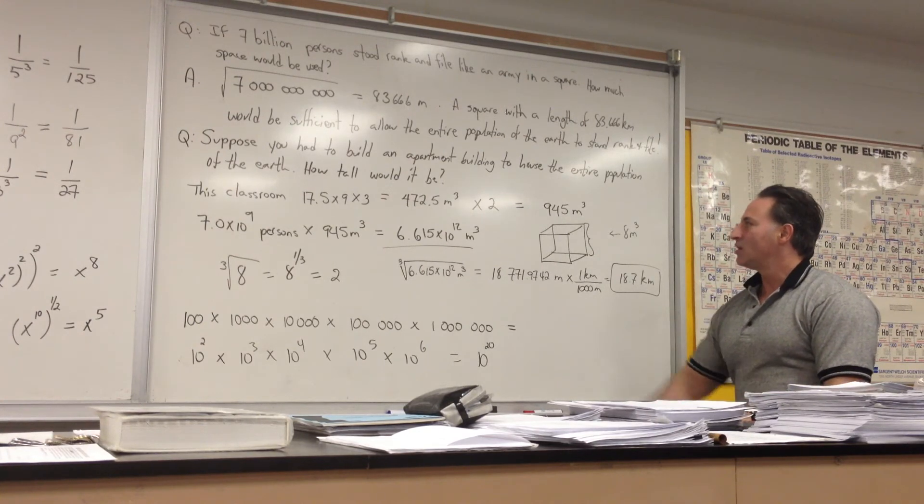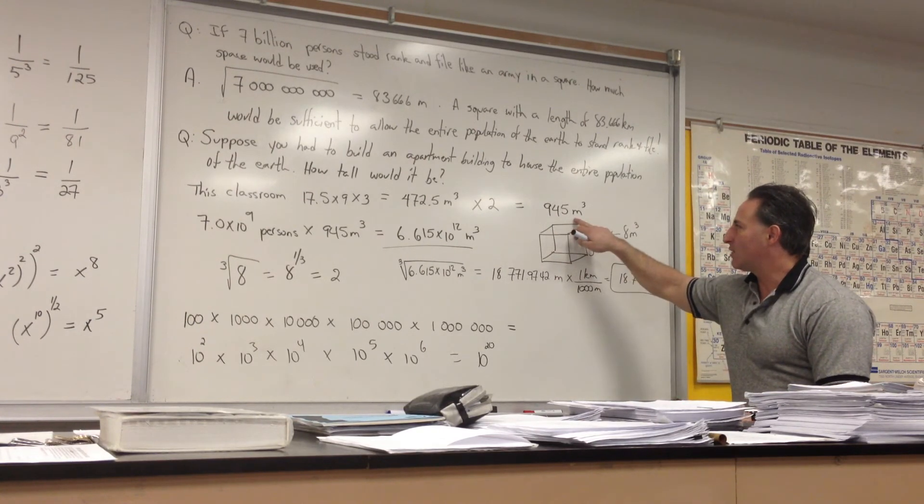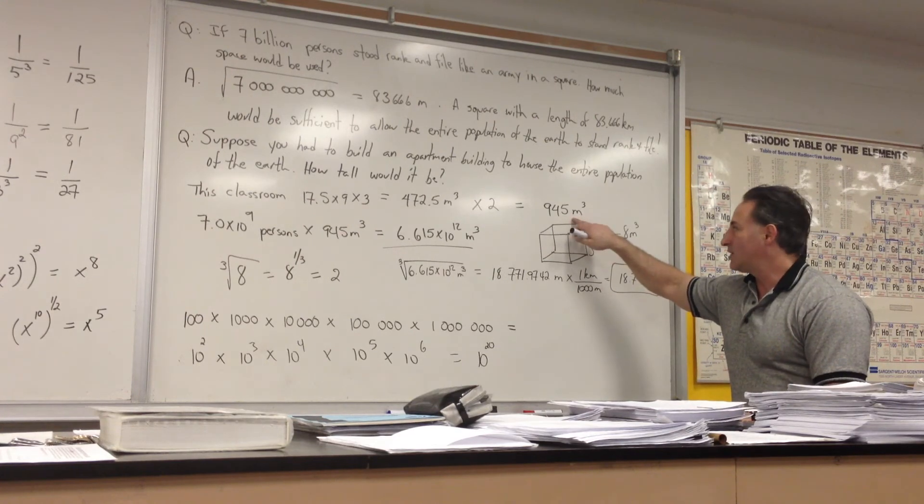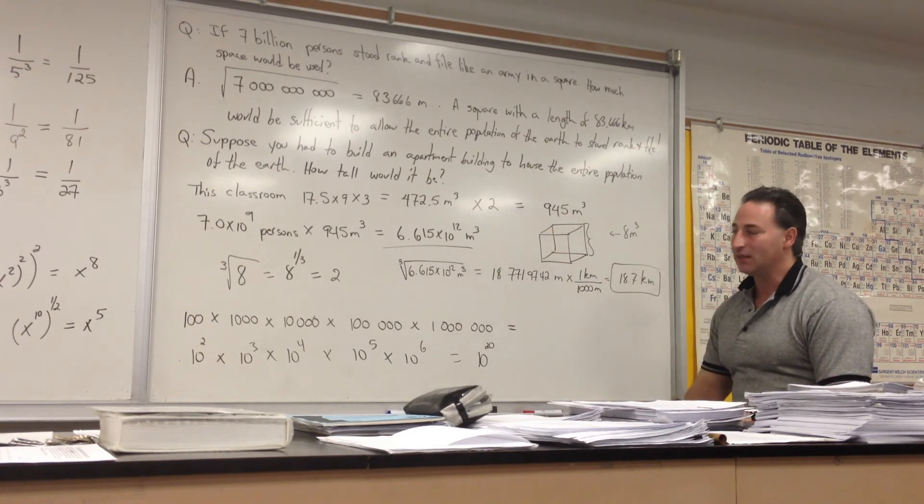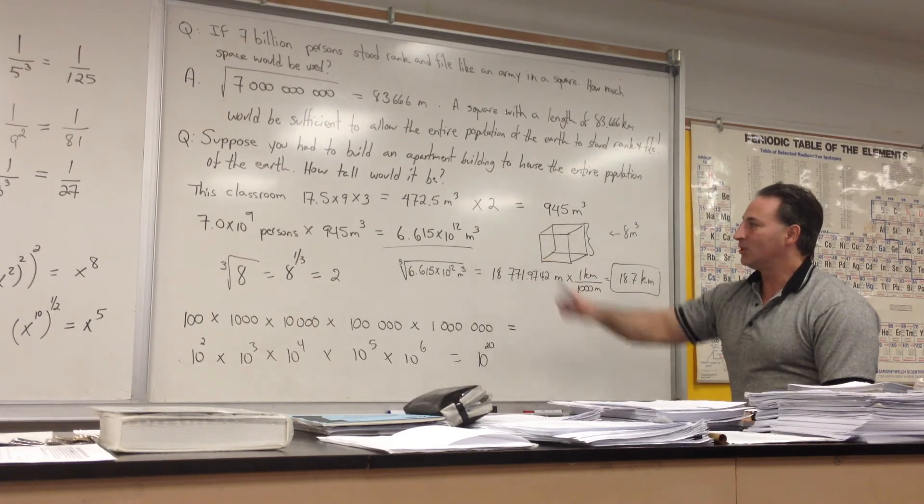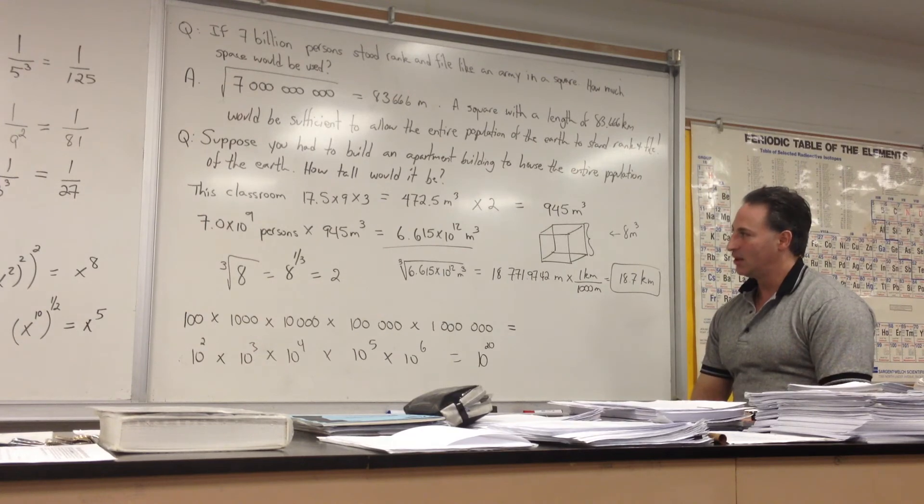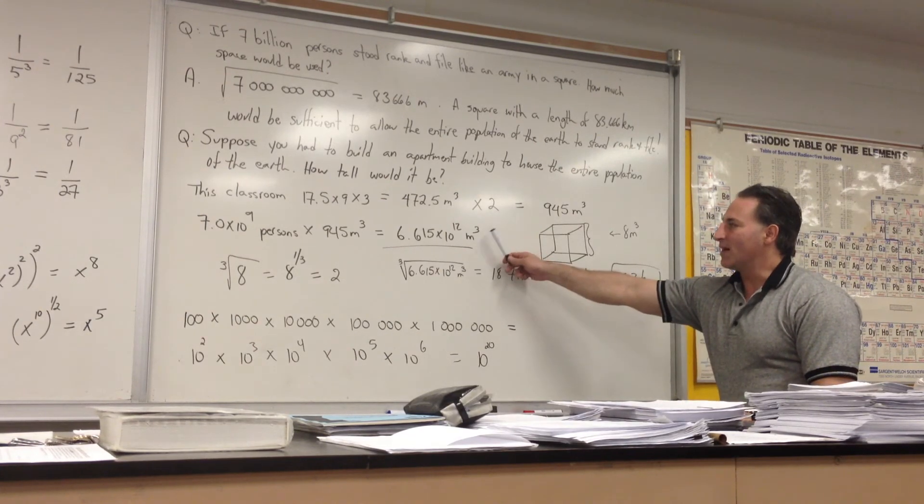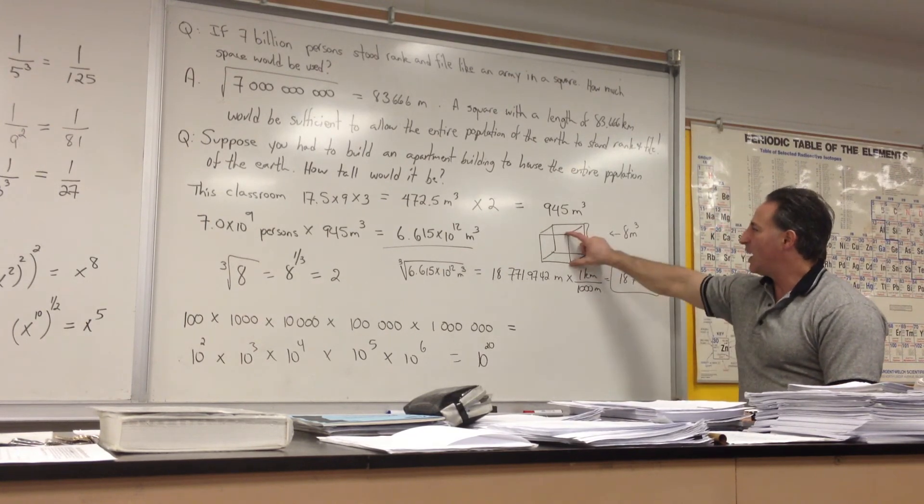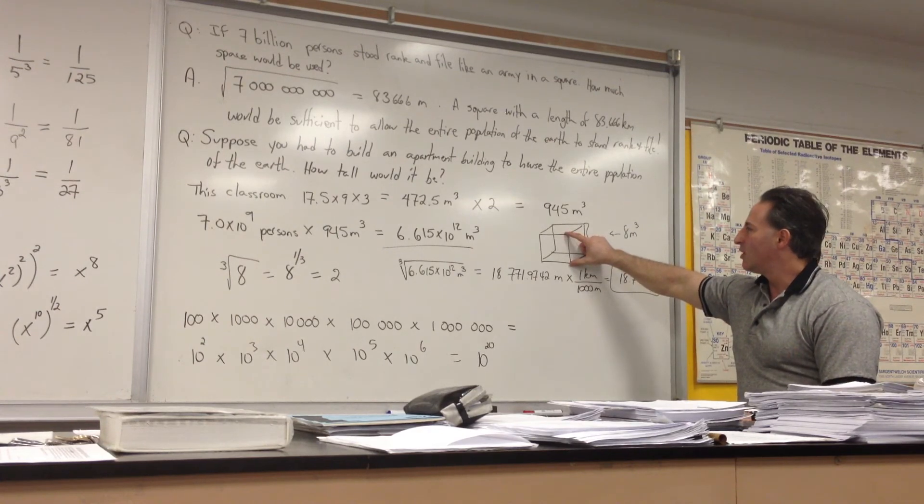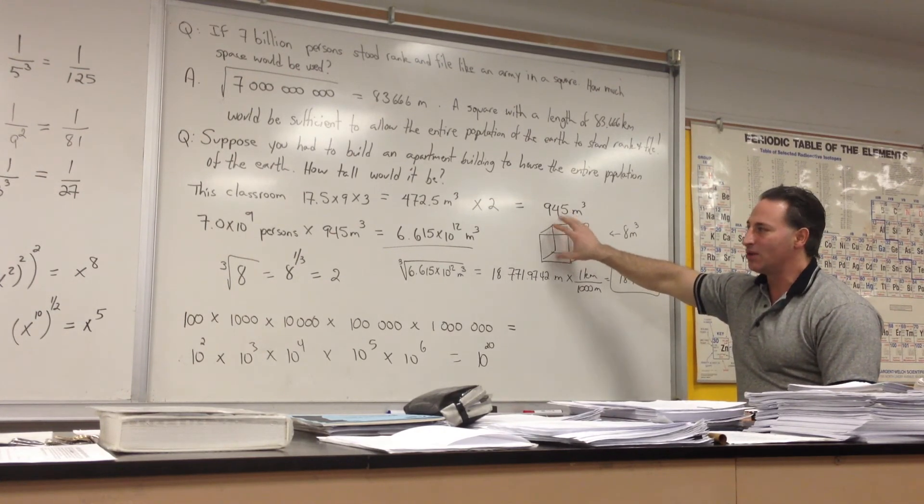Corridors, every human being in the entire planet would have 945 cubic meters. So we take that number, multiply it by 7 billion, and we get that the building itself would have to be 6.6 times 10 to the 12 meters cubed, 6.6 trillion cubic meters. If we take the cube root of that number, we will find the height of the cube that would be 6.6 trillion cubic meters.